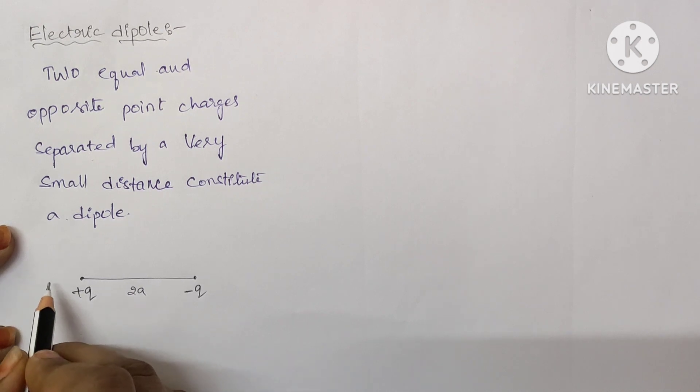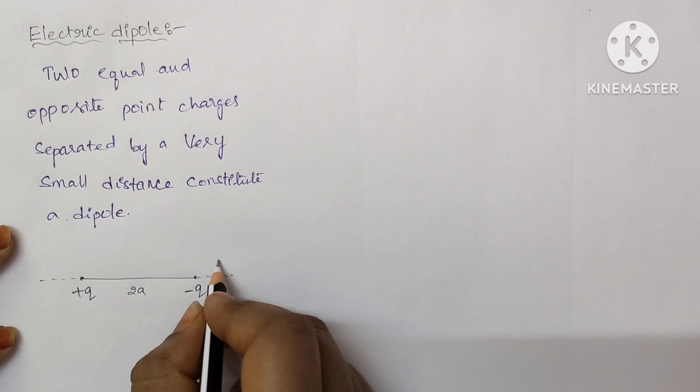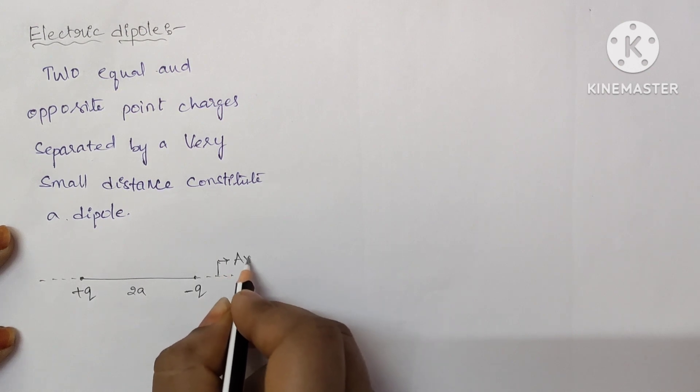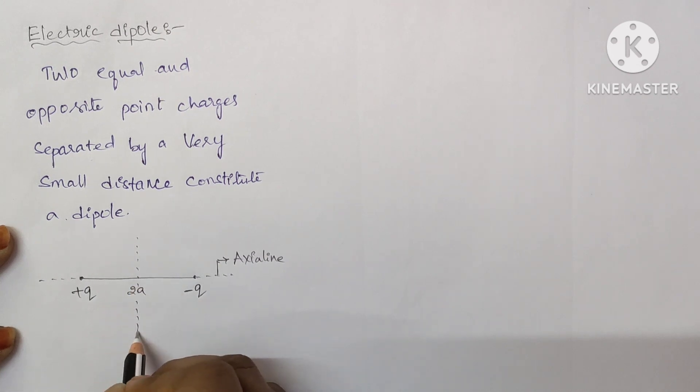The line which is parallel to the length of the dipole is called axial line. The line which is perpendicular to the length of the dipole is called equatorial line.